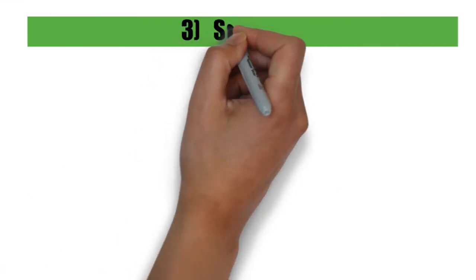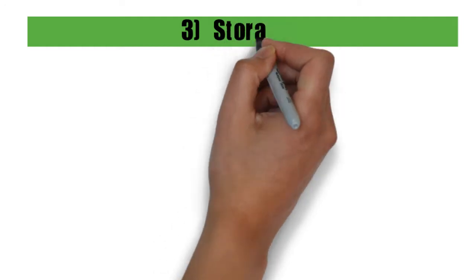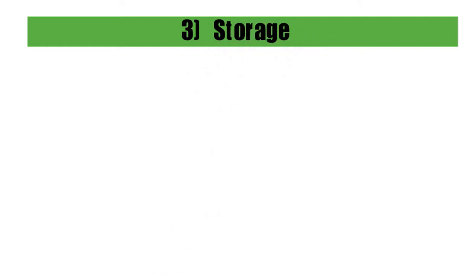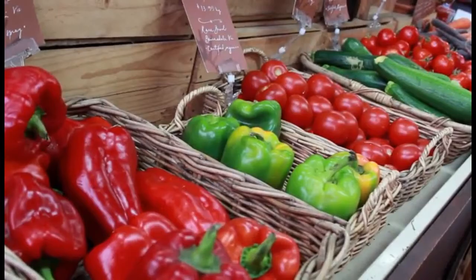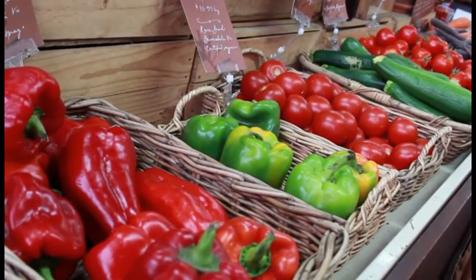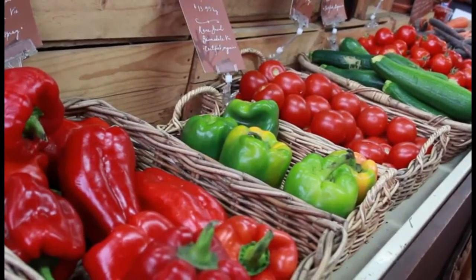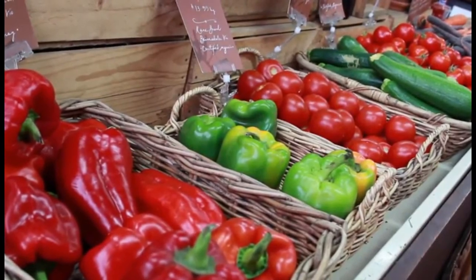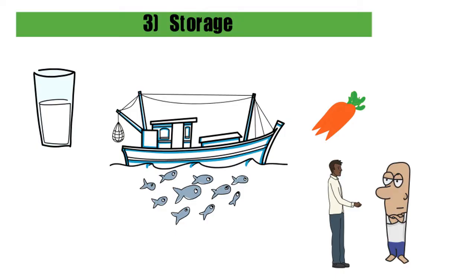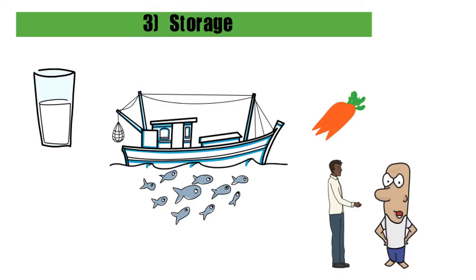Storage problems were another difficulty. Some goods are highly perishable in nature. Goods like milk, fish, or vegetables do not have durability. Plus, they need to be stored carefully, which meant additional cost. This made trading pretty difficult.